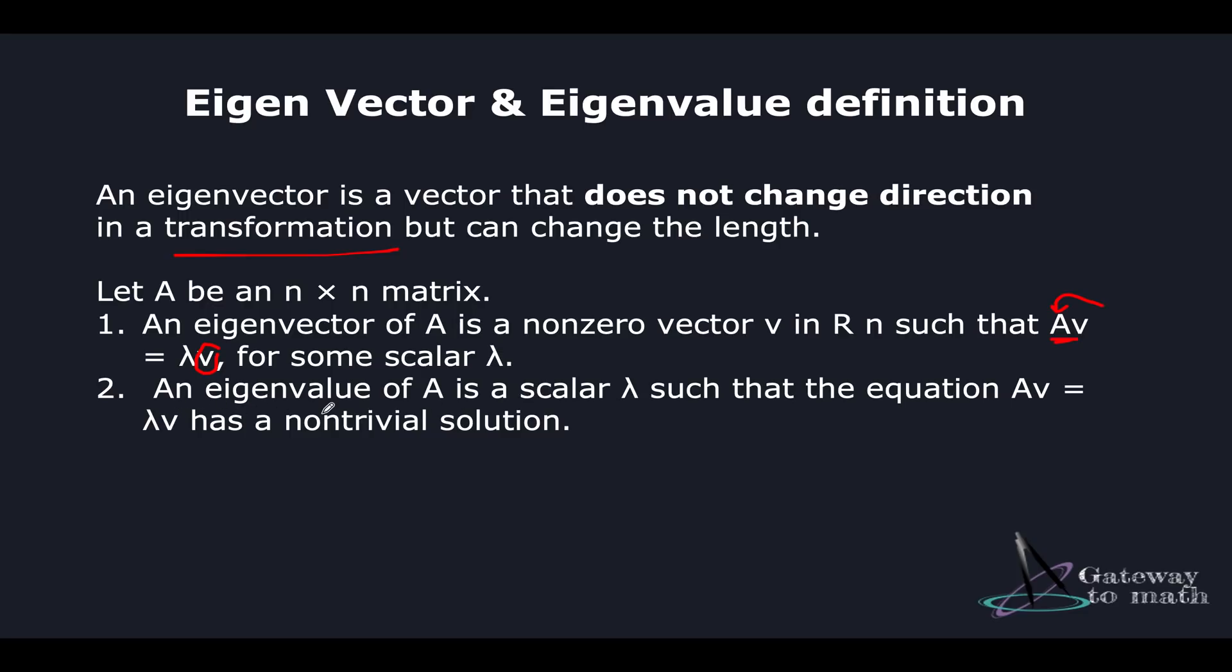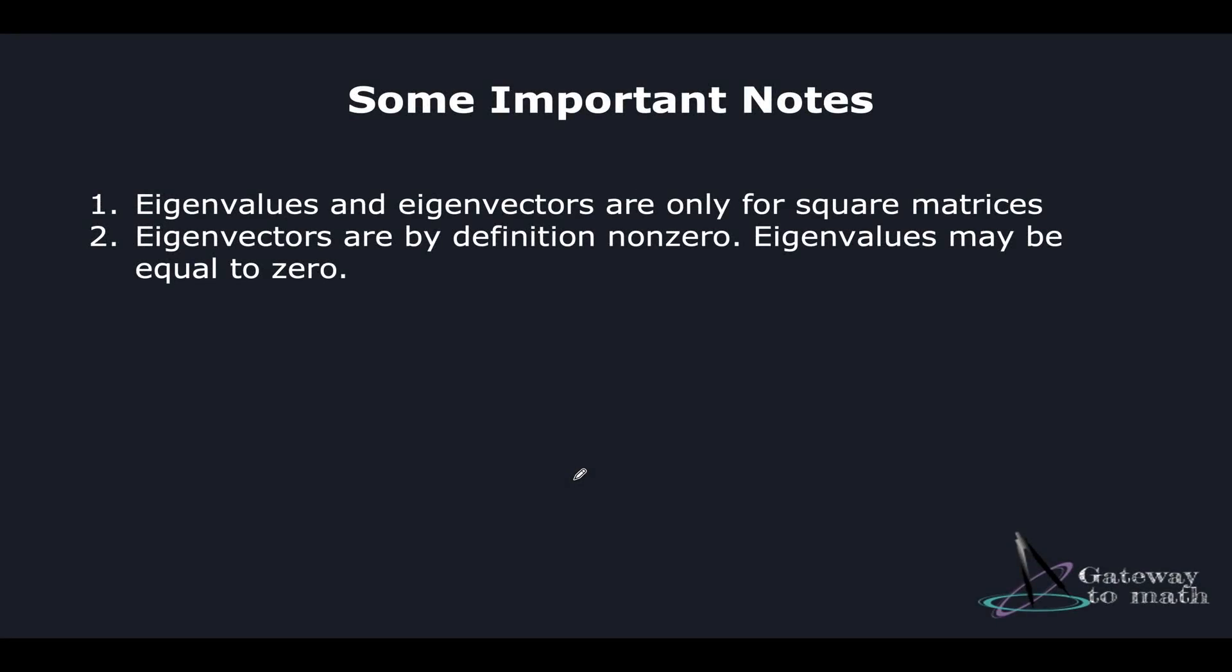An eigenvalue of A is a scalar lambda such that the equation Av equals lambda V has a non-trivial solution. So it always has to have a non-trivial solution. Let's take an example real quick and understand what exactly a non-trivial solution is, which is two important points.